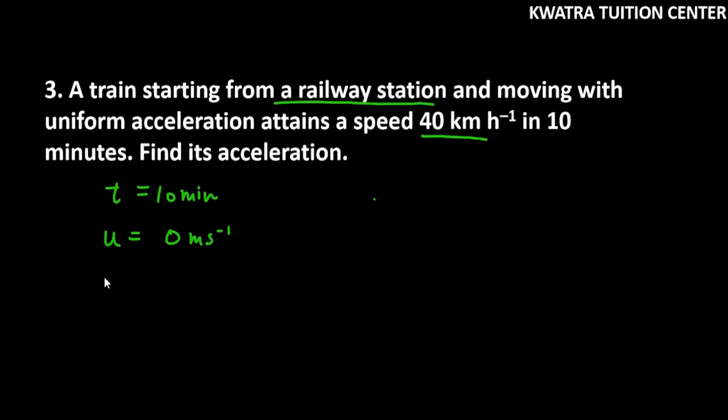If we talk about v, we have attained the final velocity 40 km per hour. Now we will convert it to meter per second. To convert, multiply 5 over 18, so the answer will be 11.1 meter per second. Your initial velocity and final velocity will be in meter per second.